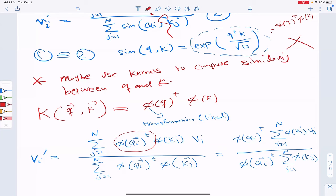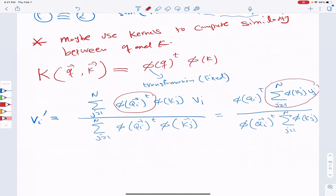So let's see. In order to compute this, I need to compute this part, which means I need to compute the transformed versions of all the keys, multiply with the value. So there's a transpose here. I'm sorry. But I'll do it once. And I can store it. Because this part doesn't depend on I. It is the same for every token.